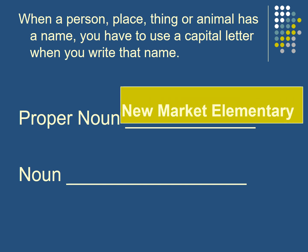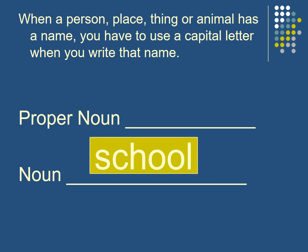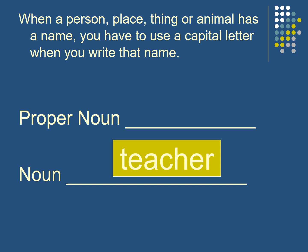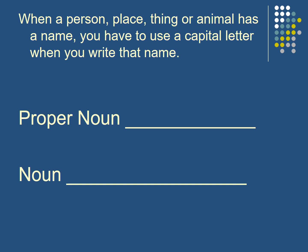New Market Elementary — this is the name of the school, so I have to capitalize all the words. If I say school, meaning any school, I write it with a small letter. If I have Mrs. Kerr, this is the name of a woman. But if I have teacher — any teacher — it's not a name, so I write it small, not capital.